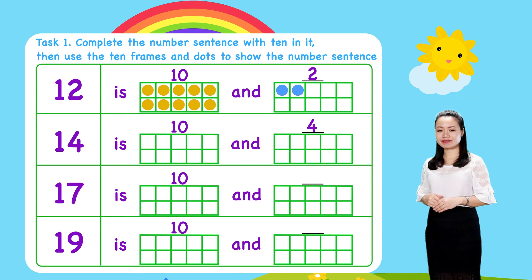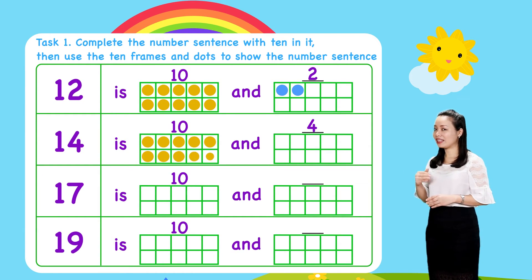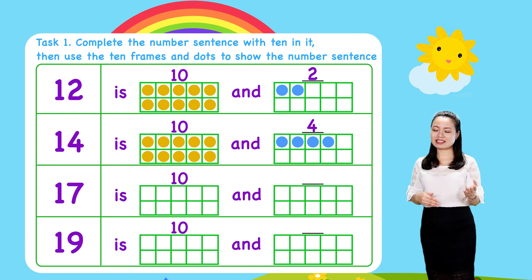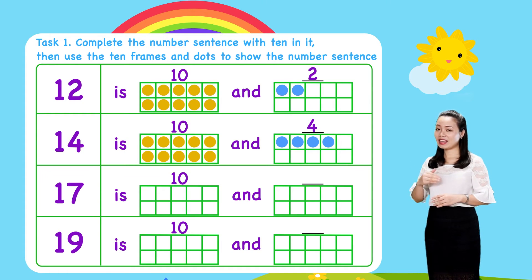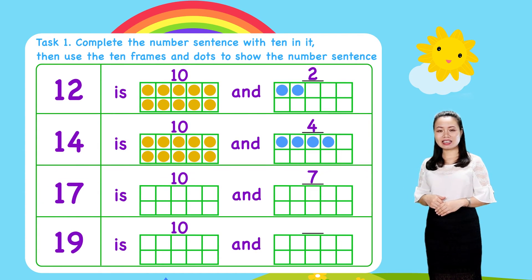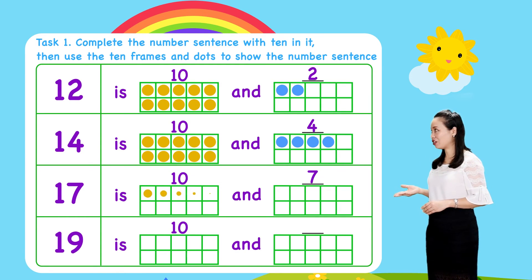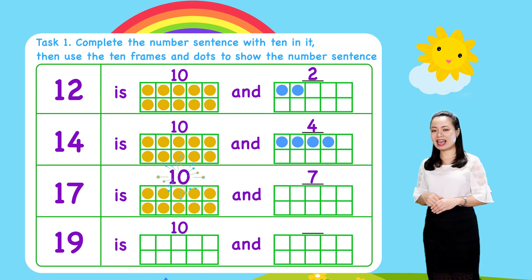To show this number sentence, draw 10 dots in the ten frame to represent number 10. Then, draw 4 more dots to represent number 4. Next, 17 is 10 and 7. Number 17 is decomposed into 10 and 7. To show this number sentence, draw 10 dots in the ten frame to represent number 10, then draw 7 more dots to represent number 7.